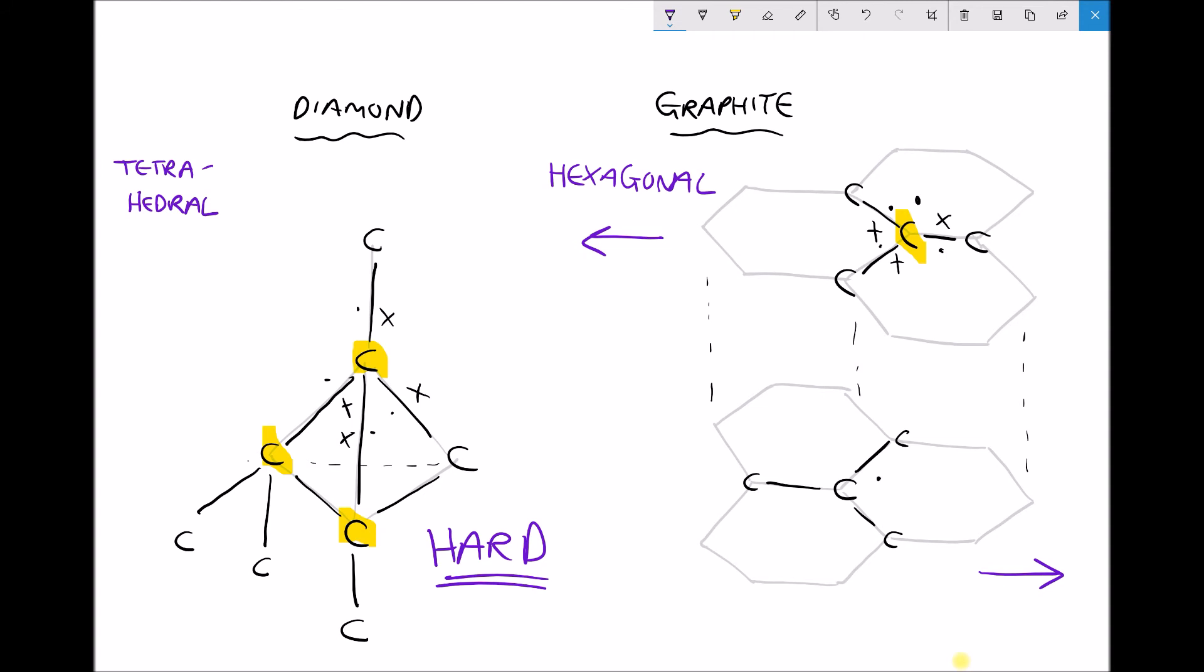The other thing that's worth considering is whether each of these conducts electricity. Now diamond won't conduct electricity, it has no free electrons, whereas the graphite has these delocalised electrons and these delocalised electrons are free to move throughout the material. Therefore graphite is actually a conductor of electricity.